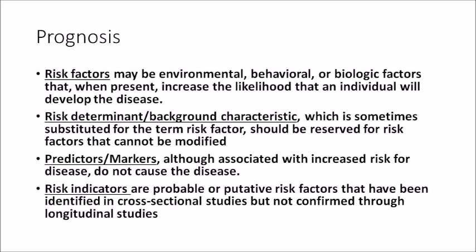Prognosis is greatly affected by certain factors. A risk factor is an environmental, behavioral, or biological factor that, when present, increases the likelihood of developing disease. A risk determinant is a background characteristic — it is a risk factor that cannot be modified. For example, age is a risk determinant; the patient can do nothing about it. In contrast, smoking is a modifiable risk factor — the patient can quit.